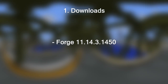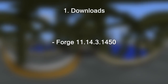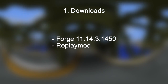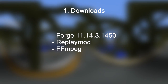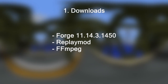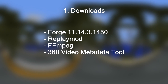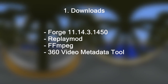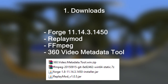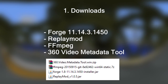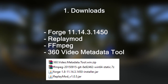The first one is Forge. Forge is the modded client that we're going to use in order to install the Replay mod, which is the second thing that we're going to download. Then the third thing is FFmpeg. You're going to need this in order to render inside of the Replay mod. And the last thing we're going to need is the 360 video metadata tool from Google itself. All of the links are down below in the description. Make sure for Forge to download the specific version that is in the video, and for the rest, just download the latest available update for your system.